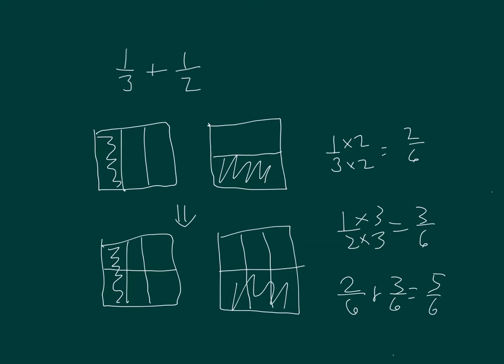So one third plus one half is equal to five sixths. I converted one third to two sixths and one half as three sixths, and then added those together when I had a common denominator.